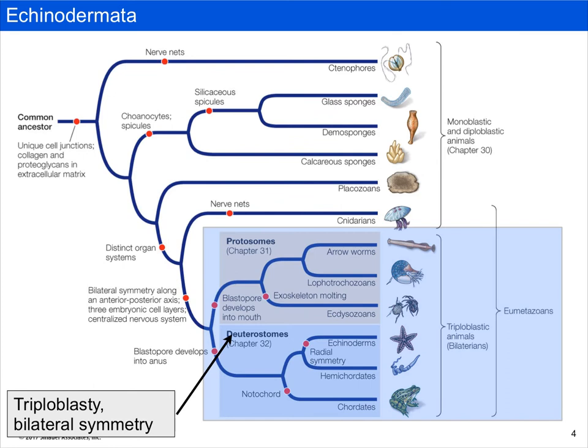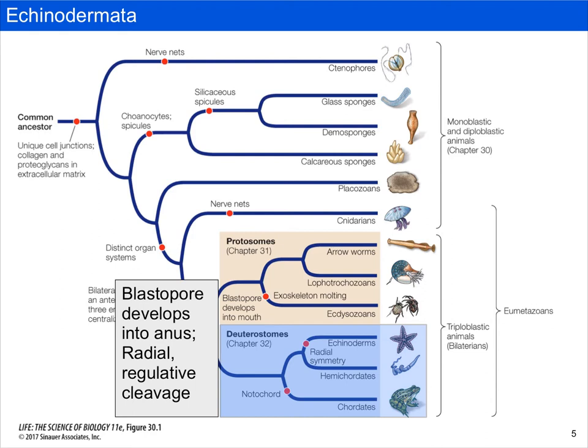Recall that bilaterians are characterized by being triploblastic — they have ectoderm, endoderm, and mesoderm. They also have bilateral symmetry, with some secondary derivations in the Echinodermata. The deuterostomes are characterized by having radial, regulative cleavage, in which cell fate is determined late by chemical gradients. They also have a blastopore that develops into the anus, as opposed to the mouth like we find in protostomes.